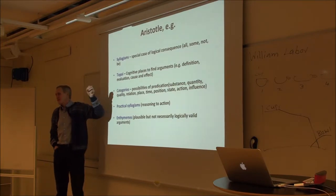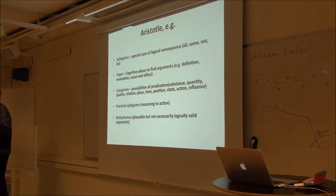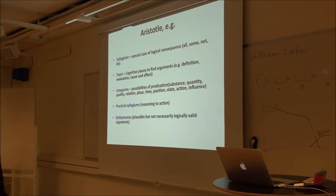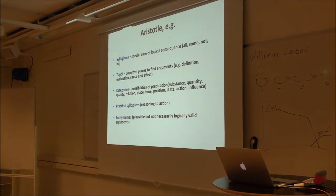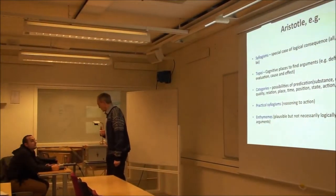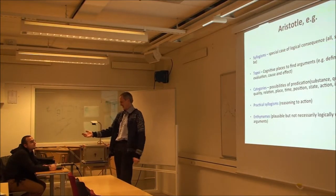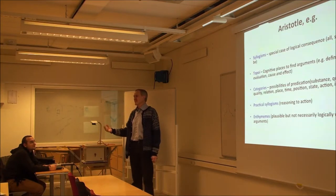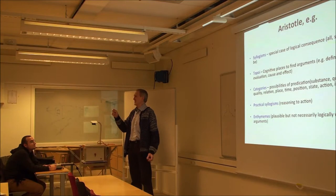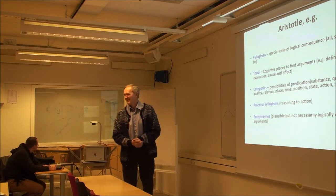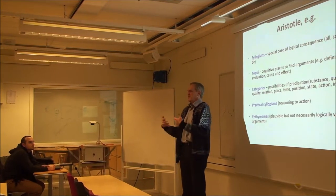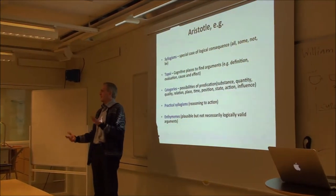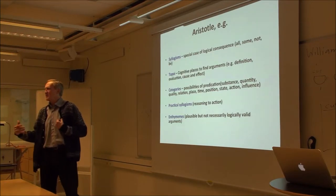You get the idea of what a topos is: subject areas where, if you learn a list of them, you can always think of things to say in arguments. You can also use them to test the strength of what somebody is saying when they're trying to persuade you. Then there is the idea of categories — possibilities of predication. For example: 'this chair is red' is a predication of quality. 'The red chair is standing over there' is a predication of place. 'There are six chairs in the front row' is a predication of quantity. Aristotle identified ten such categories on an abstract level.